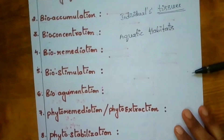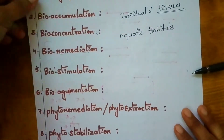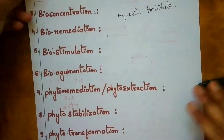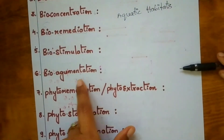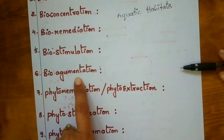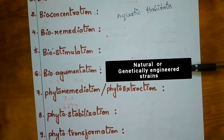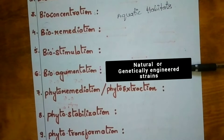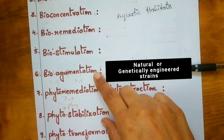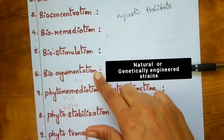The next term is bioaugmentation. Bioaugmentation means introducing natural or genetically engineered strains into an area to achieve bioremediation. That is called bioaugmentation.